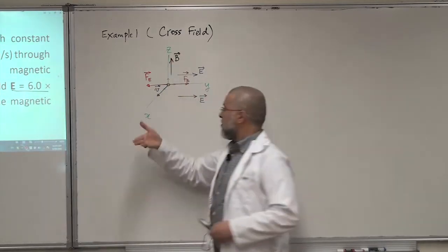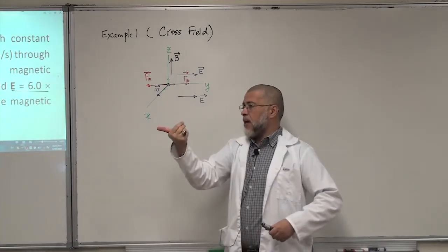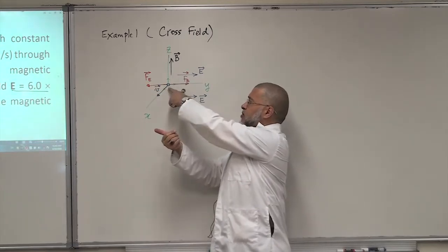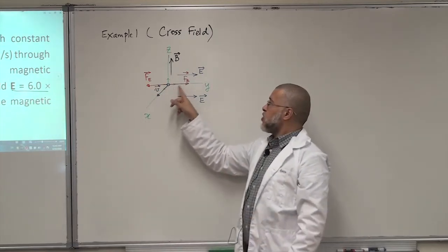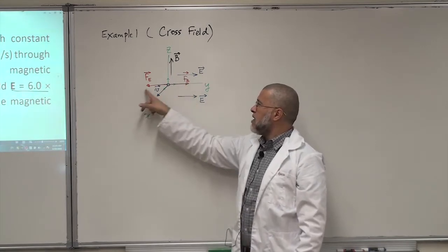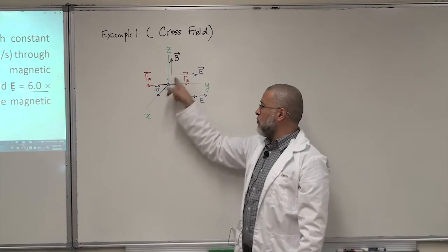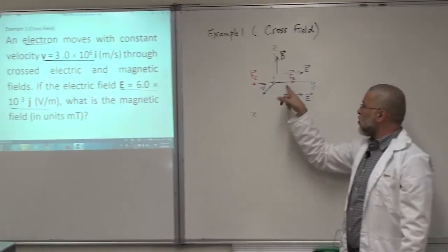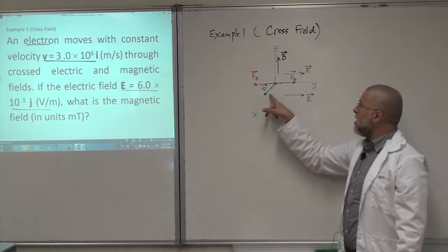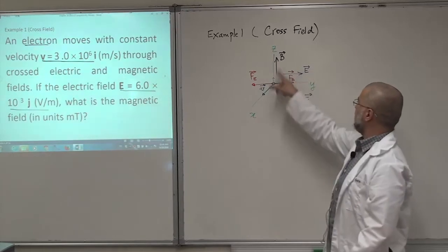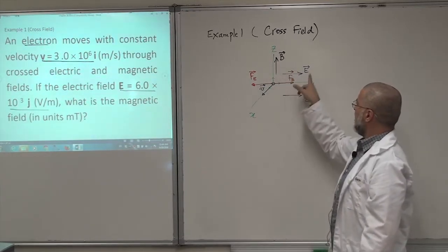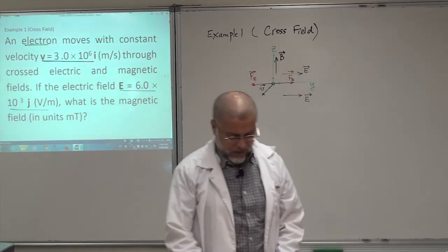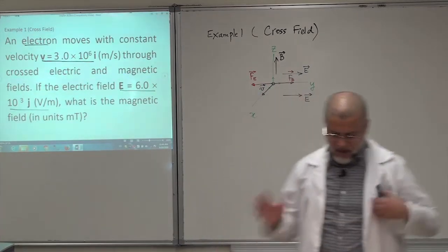Now let's apply the right-hand rule. V is out, B is up, the magnetic force is in this direction. But then, because of the negative charge, you change direction and make it in this direction here. So I know that the magnetic force should be in this direction because it has to cancel the electric force so that the electron moves at constant velocity. So I know FB, I know V, I can find the magnetic field here. And you can see that they are crossed - they are perpendicular. E is along the Y axis and B is along the Z axis. This is very important.